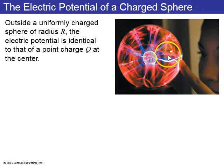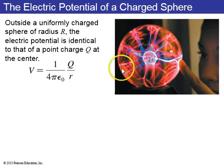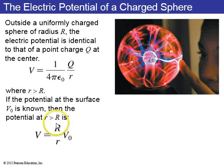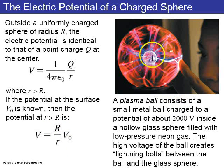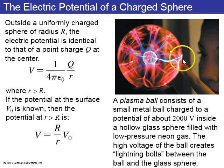For a uniformly charged sphere of radius R, the electric potential outside that sphere is identical to that of a point charge at the center. Outside the sphere, the electric potential is Coulomb's constant times Q over R. If you know the electric potential at the surface, you can use capital R over r times the voltage at the sphere's surface. This plasma ball contains such a charged sphere at the center with a high voltage. When you touch the outside — which is at zero volts — little lightning bolts travel through the plasma carrying electric current from the high-voltage center to the zero-voltage edge.